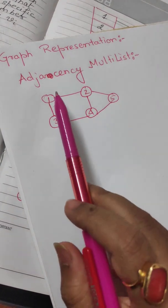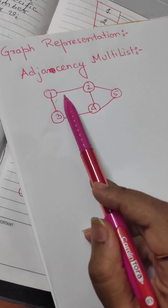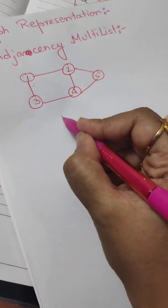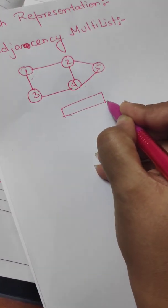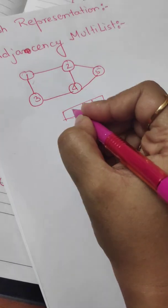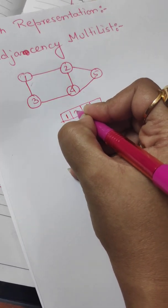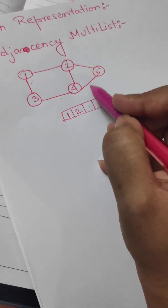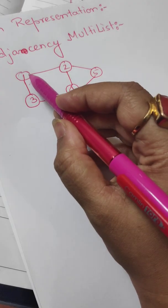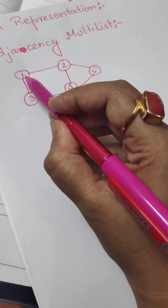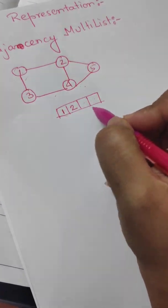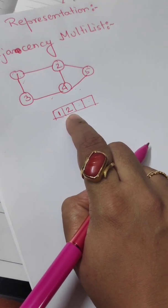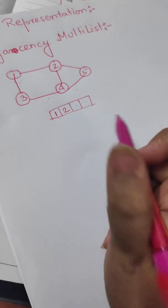In the adjacency multi-list representation, every edge is represented with a starting vertex, an ending vertex, and two pointer spaces. Since this is an undirected graph, representing an edge as one-to-two or two-to-one means the same thing. This particular edge could have been represented as two-one as well — it would have meant the same thing. So this is the first edge.